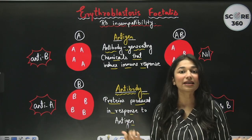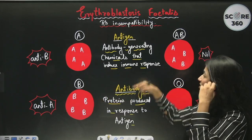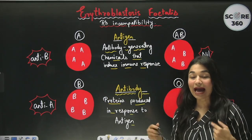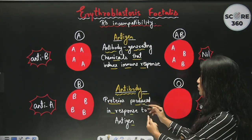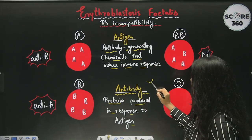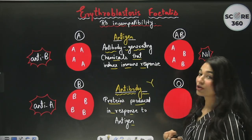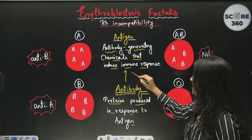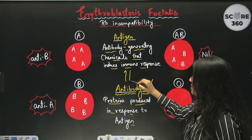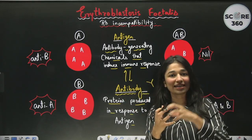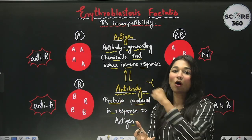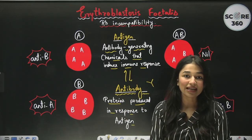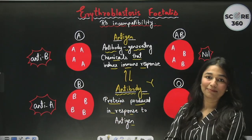When a foreign antigen enters the body, the body produces antibodies. Antibodies are Y-shaped proteins that bind to the antigen. The antibodies will then kill the antigen.